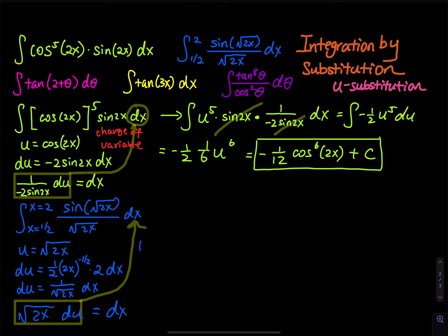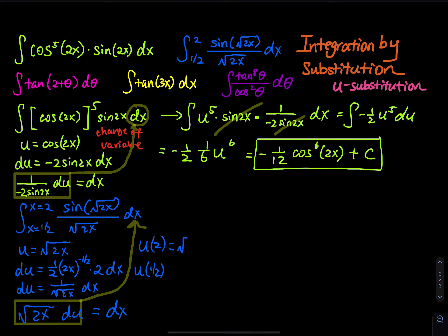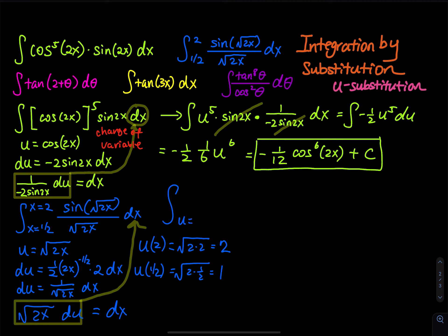For a definite integral, we must also convert the limits. When x equals 2: u equals square root of 2 times 2 equals square root of 4 equals 2. When x equals one-half: u equals square root of 2 times one-half equals square root of 1 equals 1. So the new limits are u equals 1 to u equals 2.